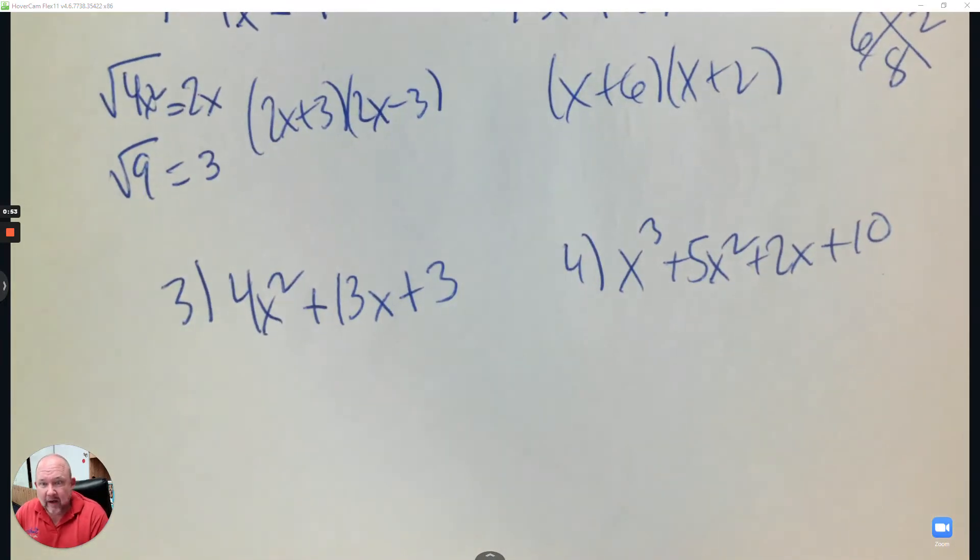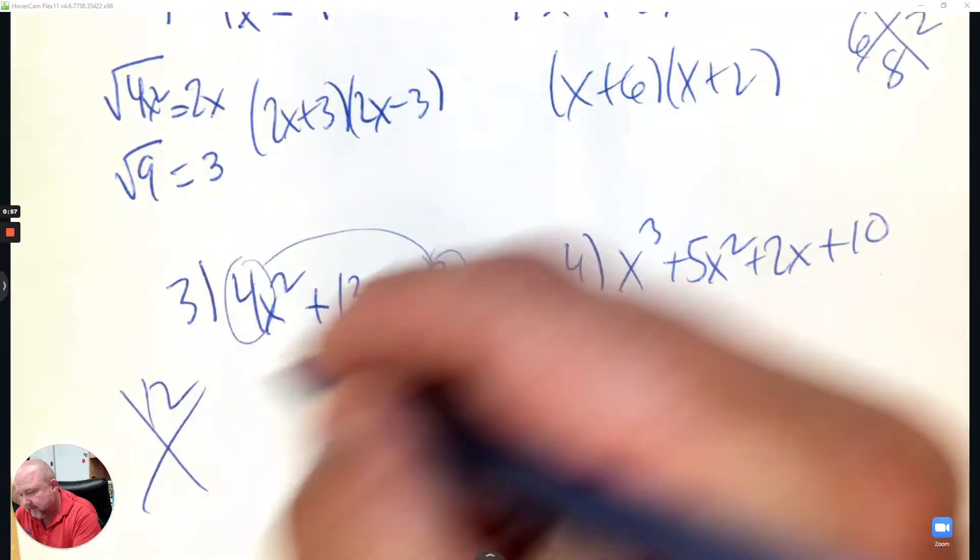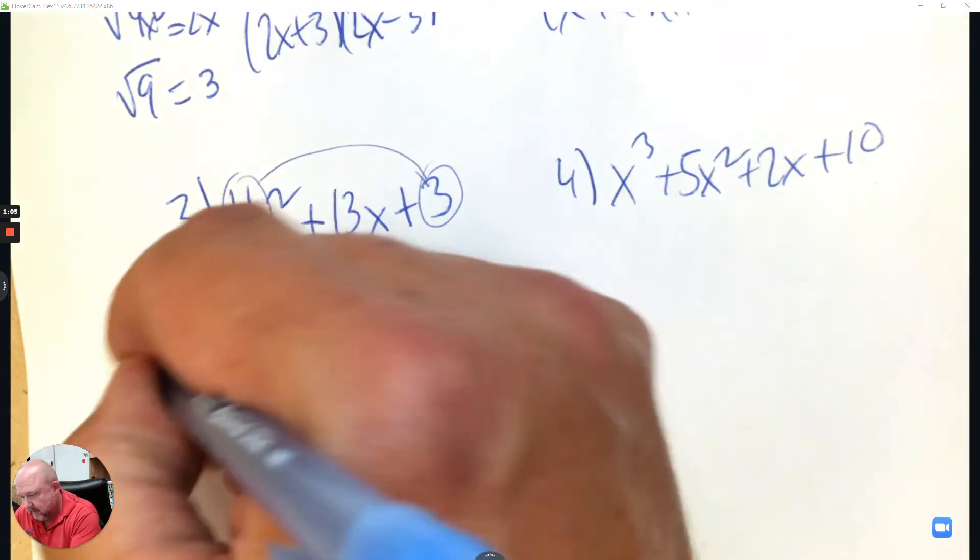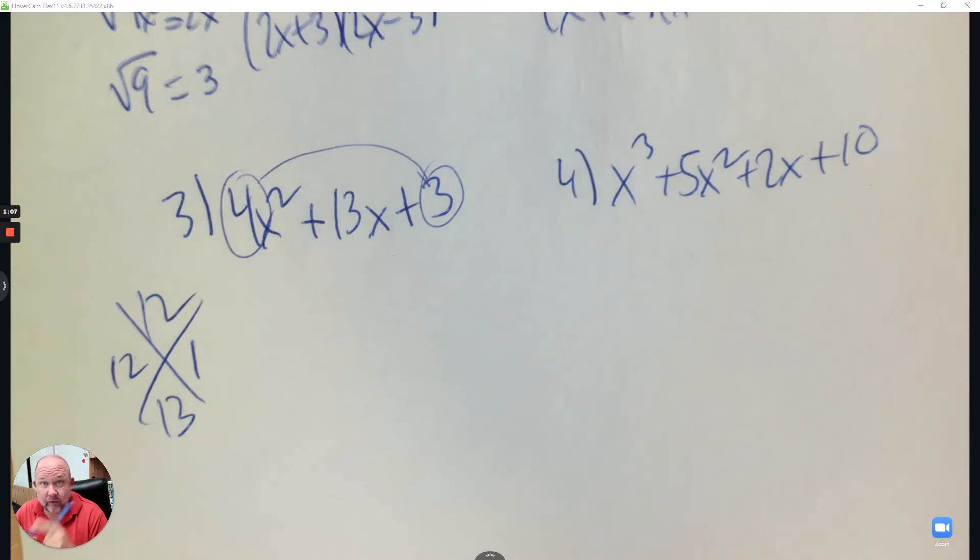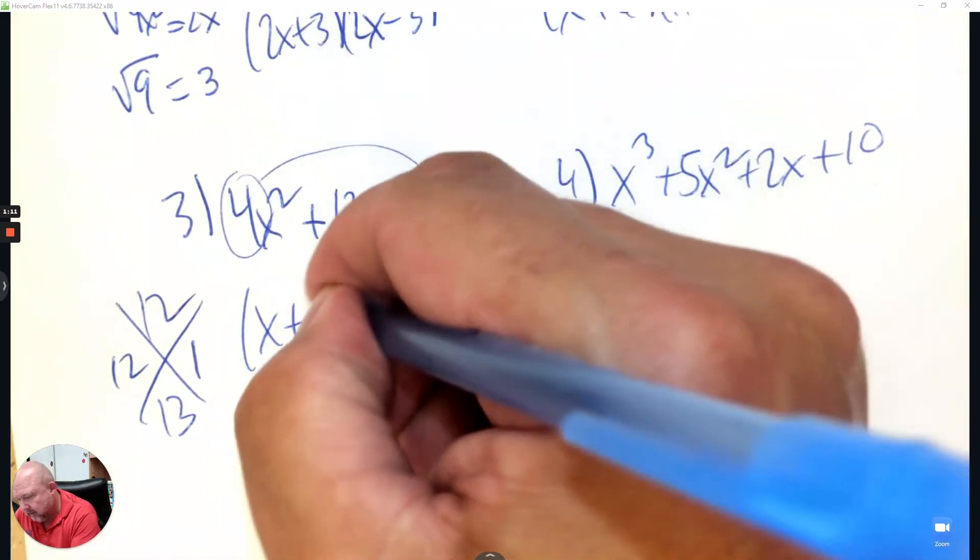This one, not so simple. So we need to take the first number times the last number. That's 12 and 13. What two numbers multiply to 12 and the same two numbers add to 13? So think what those two numbers are. And those two numbers are 12 and 1. So 12 times 1 is 12 and they add to 13. Then I write down 12 and 1.